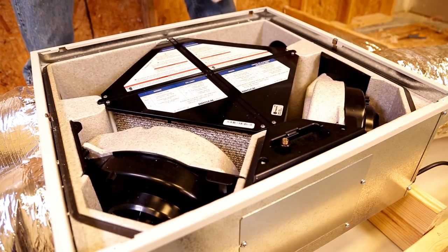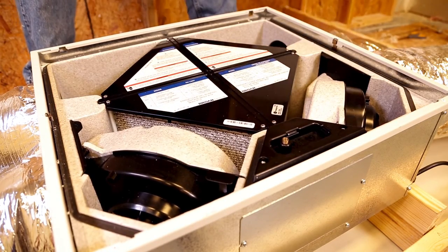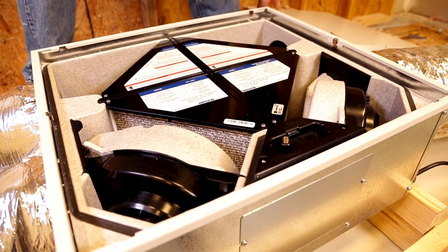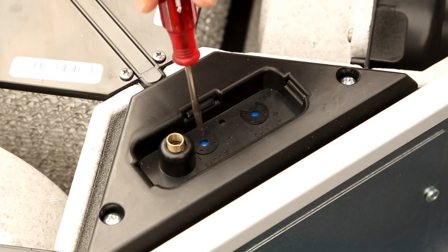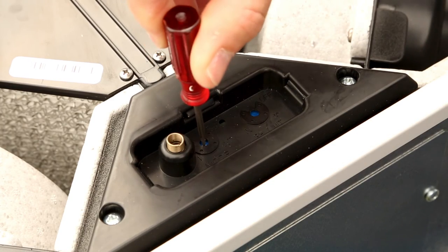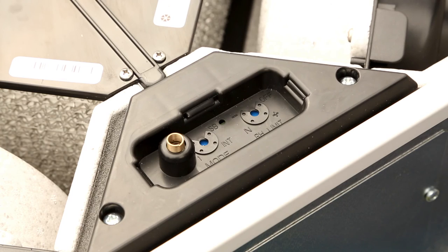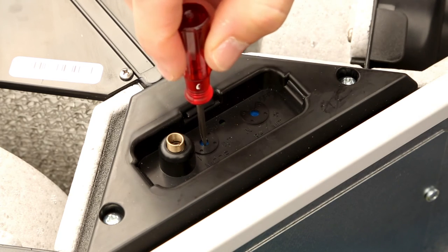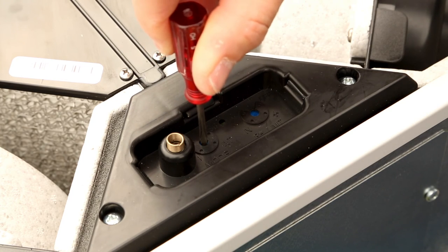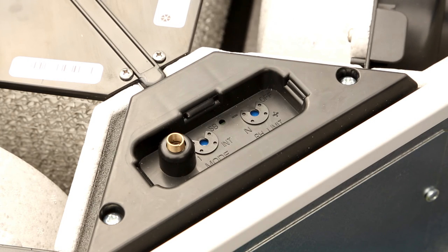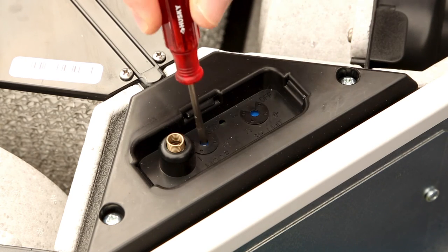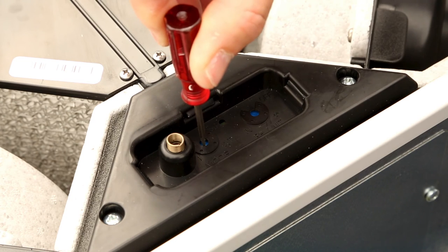Remove the door to access the mode and RH controls. The ERVS-100 features four available modes. In standby mode, the unit is off but can be activated in high speed by the 20-minute push button control if applicable. When the unit is in the intermittent mode, it works 20 minutes per hour in low speed and can be activated in high speed by the 20-minute push button control.